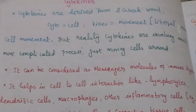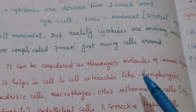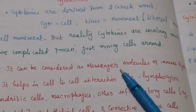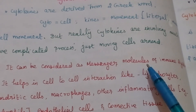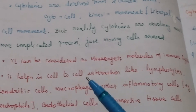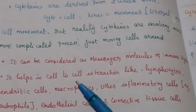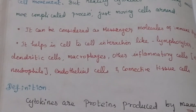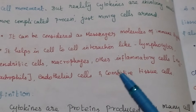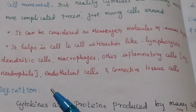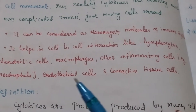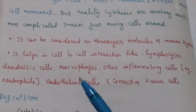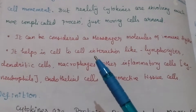Cytokines can be considered as messenger molecules of our immune system. Cytokines can help in cell-to-cell interaction — like lymphocytes, dendritic cells, macrophages, other inflammatory cells like neutrophils, endothelial cells, and connective tissue cells.